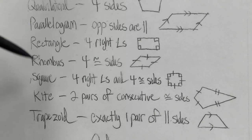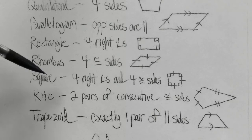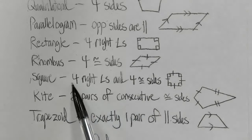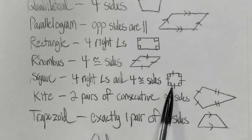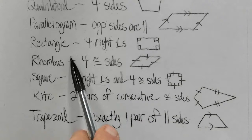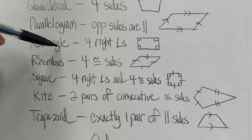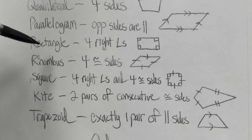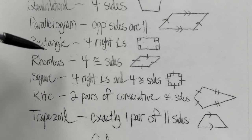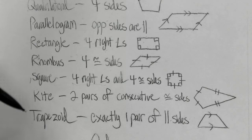Each one has different definitions and characteristics. As you can see rather quickly, some of these can also be classified as other quadrilaterals. A square is a rectangle because it has four right angles — that's the definition for a rectangle. A square is also a rhombus because it has four congruent sides. A rectangle is a quadrilateral because it has four sides, and a rectangle is also a parallelogram because the opposite sides are parallel. These things overlap and many fit the definition of other four-sided figures as well.